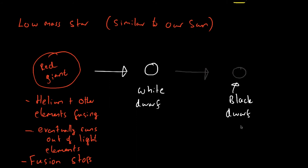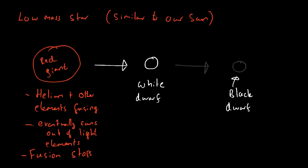The black dwarf is basically faded out — not hot anymore, not emitting light, not emitting heat because it's cooled down and nuclear fusion is not happening. It's just a mass of matter held together by gravitational force but giving out no energy. That's the end of the life cycle for a low mass star — the black dwarf is the last stage.